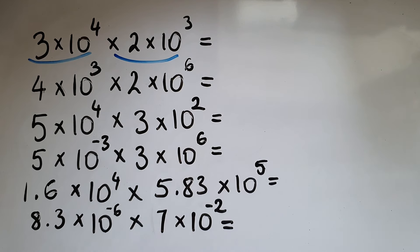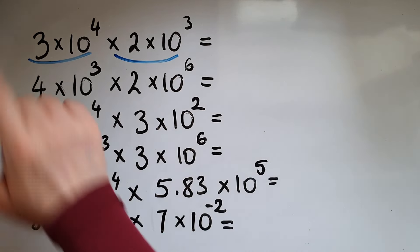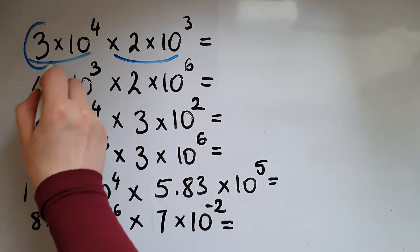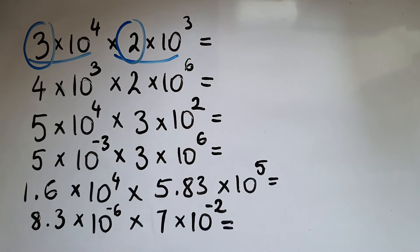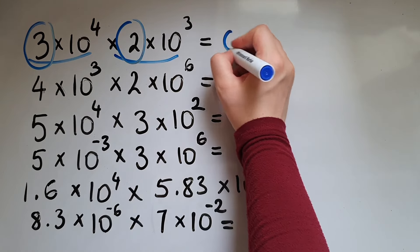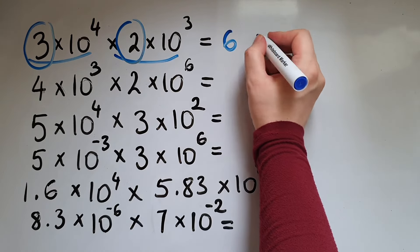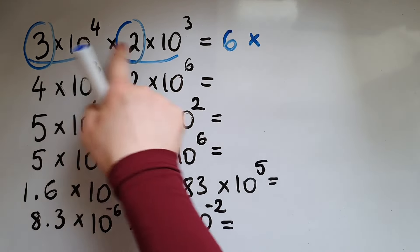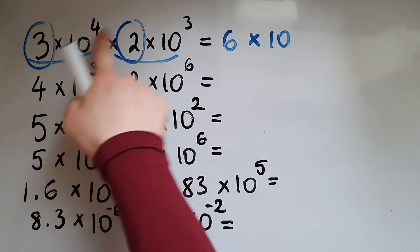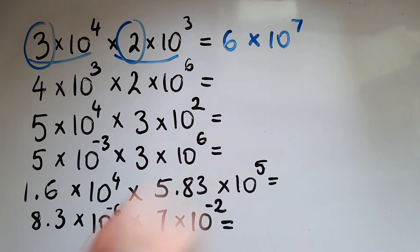You will recall from the laws of indices that we actually add the powers when we multiply. So what we're going to do is multiply first 3 by 2, which is 6, and then we've got times 10 to the power of 4 and 3, which is 7.